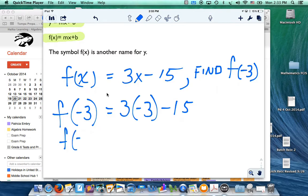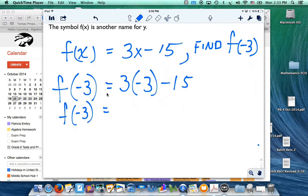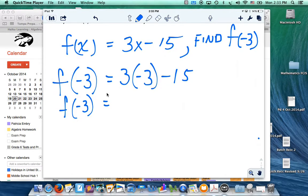Notice I'm not really doing anything to the left side of the equation. I'm just writing down f of negative 3. On the right side, I'm doing the work. 3 times negative 3, negative 9, negative 9 minus 15 equals negative 24. So, the value of f when x is negative 3 is negative 24, or a shorter way to say it, f of negative 3 equals negative 24.